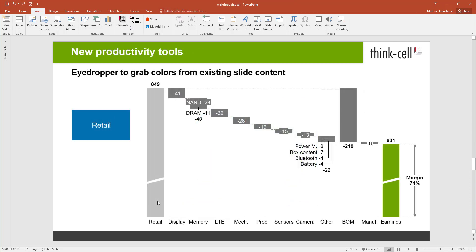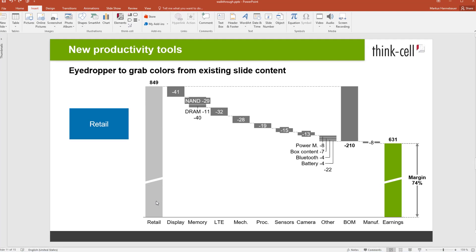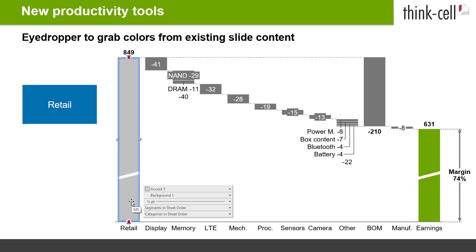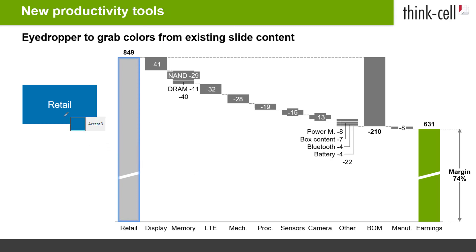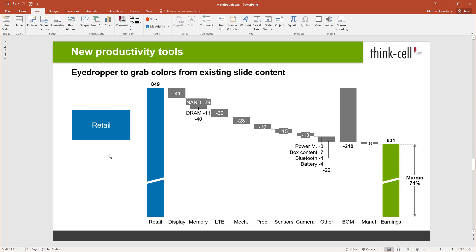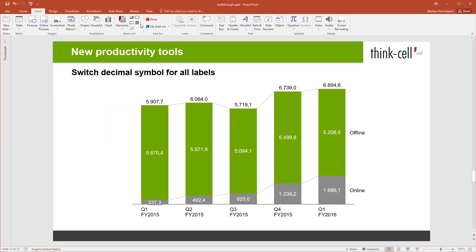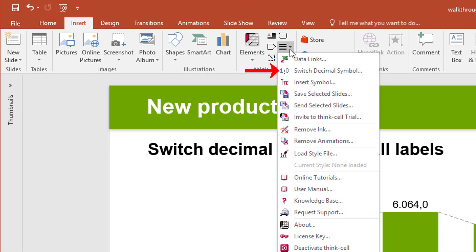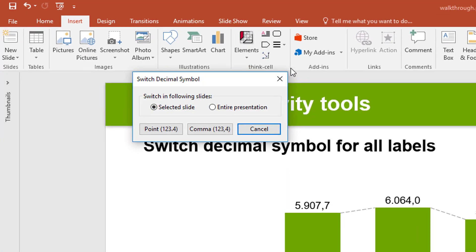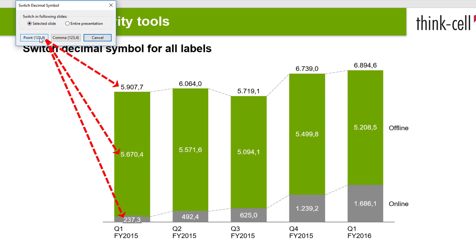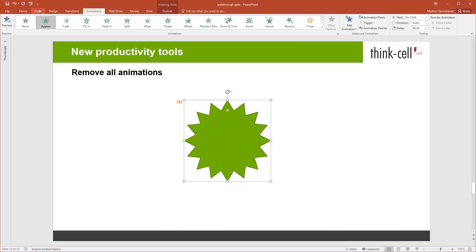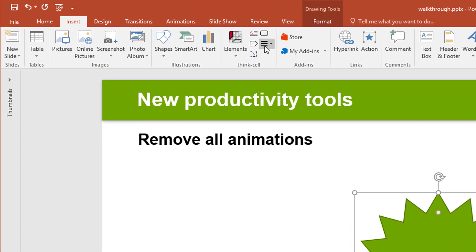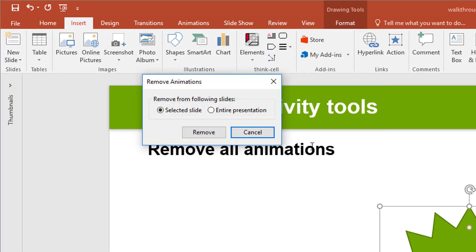Apart from layout or chart-specific features, we have also introduced some generic tools that will make your life easier. Use the eyedropper tool in the color control to easily grab colors from existing content on the slide. Switch the decimal symbol for all labels on all or selected slides with this new dialog — for example, switch from German symbols to US symbols. You can also remove all animations in a presentation from all or selected slides with just one click.